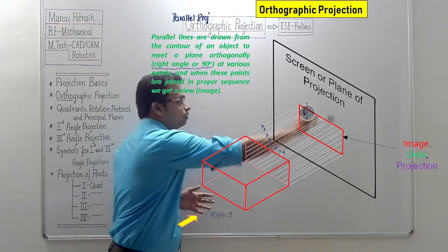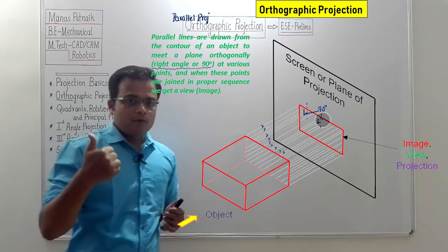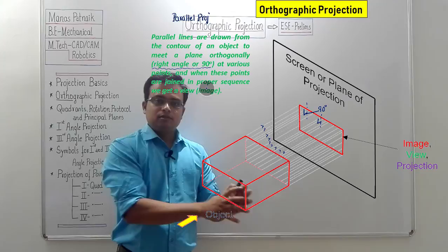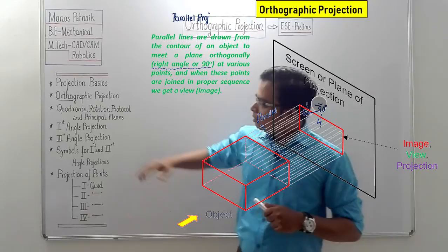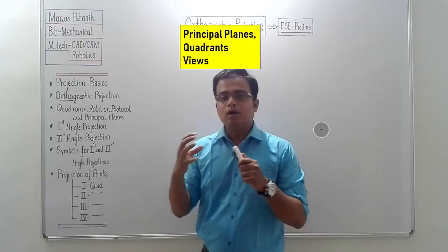When these rays of sight strike the screen, they do so at an angle of 90 degrees — and that's why 'ortho.' Two rules must be followed: number one, all rays of sight or projectors should be parallel to each other; and secondly, when they strike the plane of projection, they do so at an angle of 90 degrees. This is the entire idea of orthographic projection.